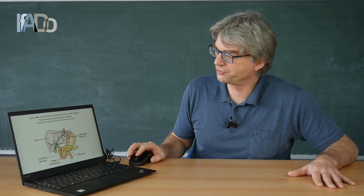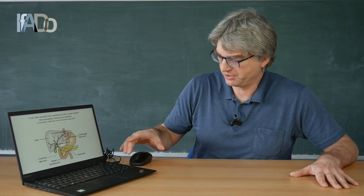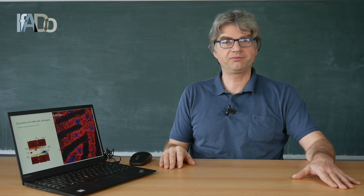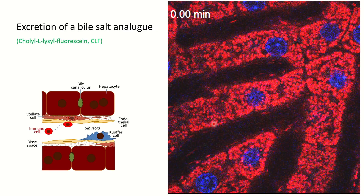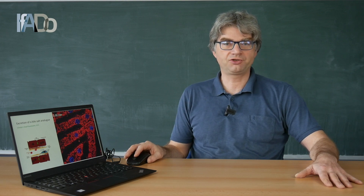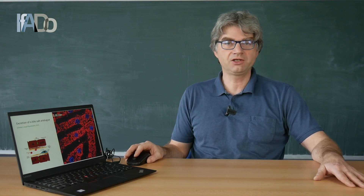The same channel system is also used to excrete bile acids, which are needed to digest fat. We established a method which allows us to take videos of liver cells at work. This is an example of an intact liver. In red you can see the liver cells which form these sheets, and in between are small blood vessels. We now inject a compound into the blood — it is a bile acid analogue, which you can see because of its green fluorescence.